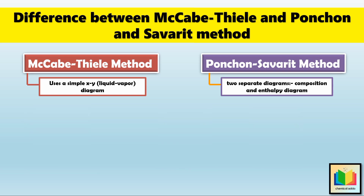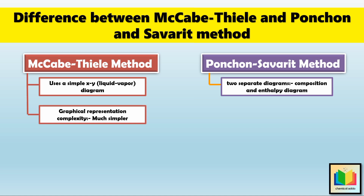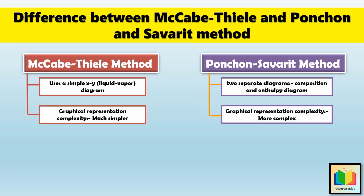The next point is graphical representation complexity. The graphical representation of the McCabe-Thiele method is much simpler because it uses only the x-y diagram, making it quick and easy to apply without requiring a lot of additional data or complicated calculations. In comparison, the Ponchon-Savarit method is more complex because it requires plotting two combined diagrams — one for composition and another for enthalpy — and also involves additional calculations for mass and energy balances, making the process more challenging.